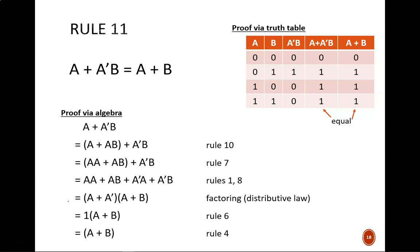If you don't believe me, then try distributing or foiling this expression. From there, A or A prime equals 1. And finally, 1 ANDed with anything equals the anything. So, we see that A or A prime B is the same thing as A or B.